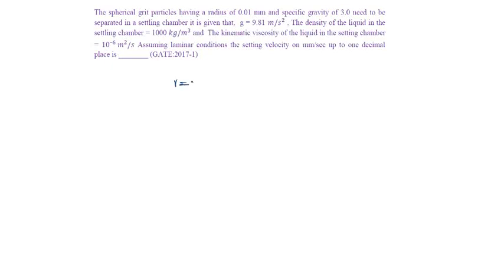Given radius of the grid particle as 0.01 mm, then diameter will be 0.02 mm, specific gravity is given as 3, g is given as 9.81 meter per second square and kinematic viscosity nu is given as 10 power minus 6 meter square per second.